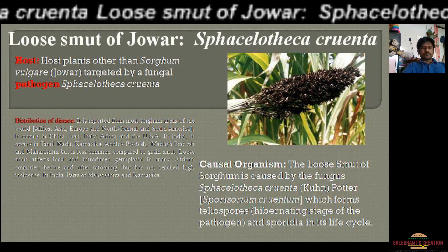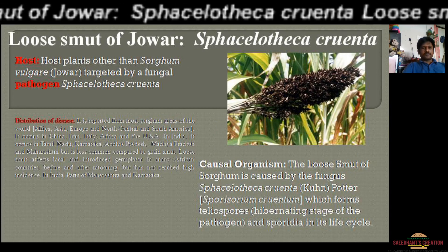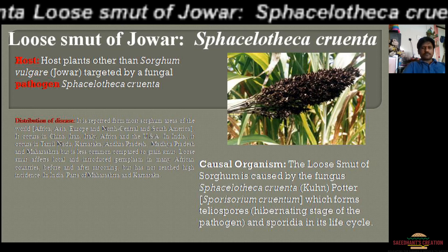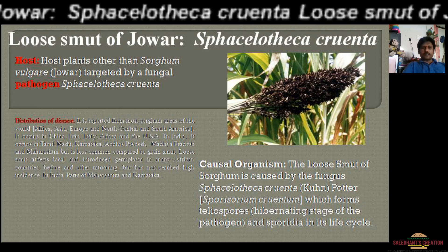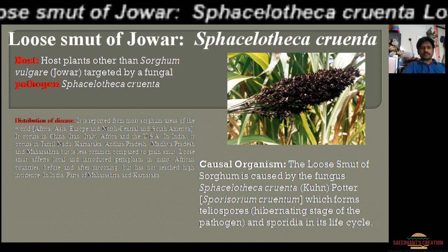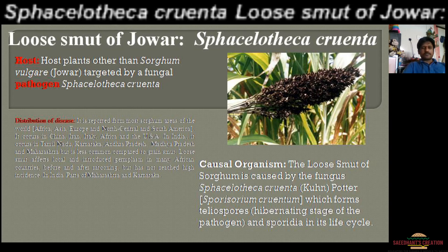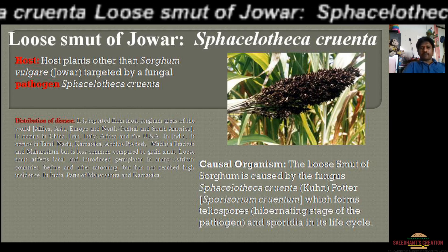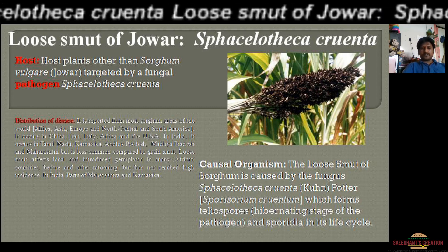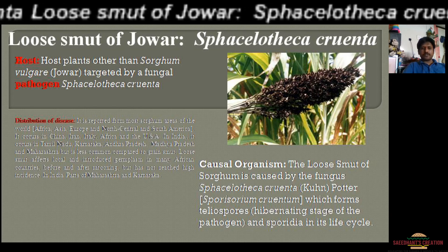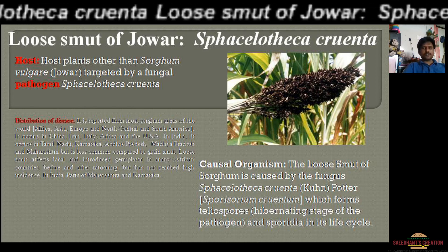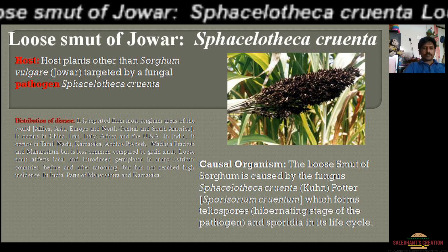This disease is prevalently found in various regions throughout the world. More often, it is associated with sorghum crop cultivating countries belonging to different continents like Africa, Asia, Europe, North, Central, and South America. Some other countries include China, Iran, Italy, Africa, and the USA. In India, especially Tamil Nadu, Karnataka, Andhra Pradesh, Madhya Pradesh, and Maharashtra are important states where cultivation of sorghum crop is carried out, and this disease is related to sorghum crop, that is jowar, which is why it is more prevalent in areas where it is cultivated.